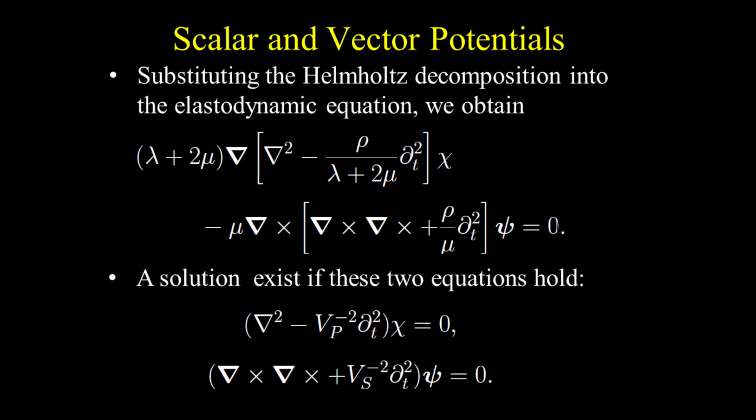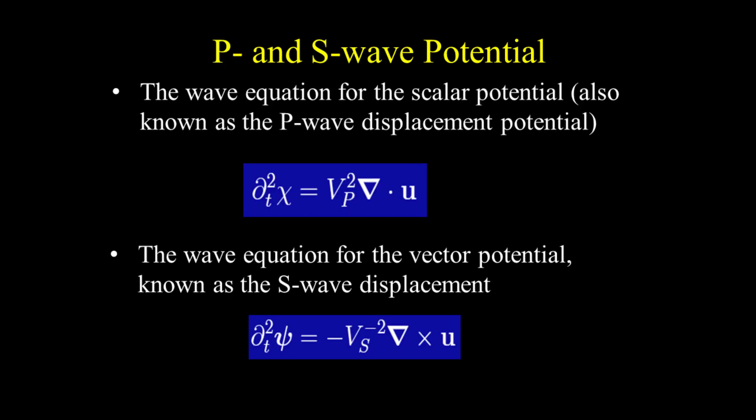When we substitute the Helmholtz decomposition into the elastodynamic equation, a solution exists if two equations hold. By substituting the Helmholtz decomposition into the elastodynamic wave equation, we show that the scalar (P wave) potential and vector (S wave) potential are well separated into two terms. A solution exists if each term is zero, giving two wave equations. The relationships between the LeMay potentials and the displacement are important, as they are used in derivations of Zoeppritz's equations.